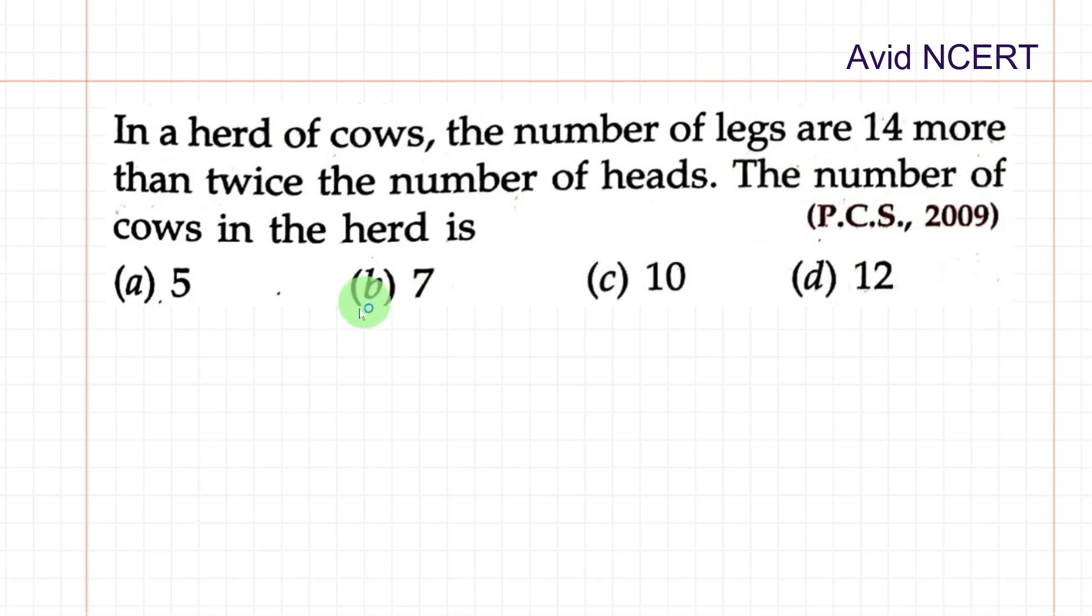From the first sentence, number of legs equals 14 more than, which is 14 plus twice the number of heads. So forming the equation is an important part.